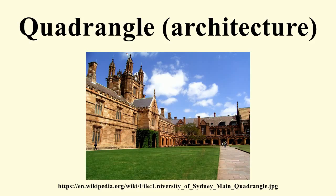The word quadrangle was originally synonymous with quadrilateral, but this usage is now relatively uncommon. Some modern quadrangles resemble cloister gardens of medieval monasteries, called garths, which were usually square or rectangular, enclosed by covered arcades or cloisters.